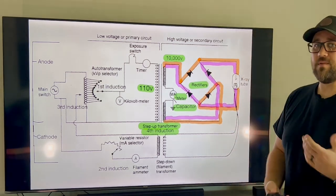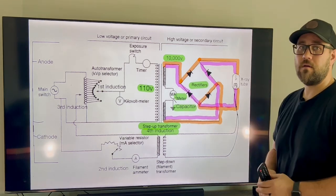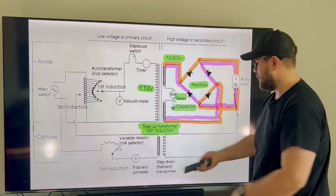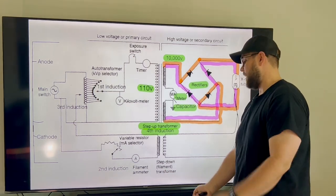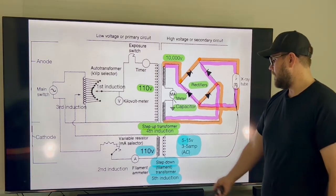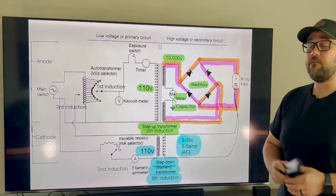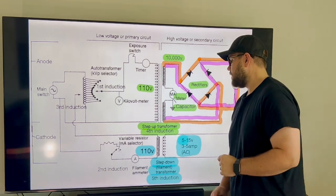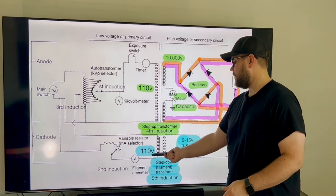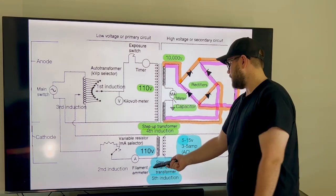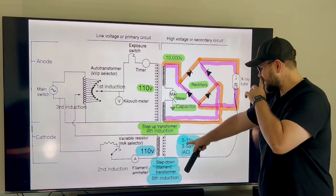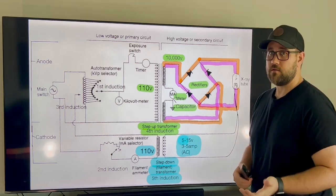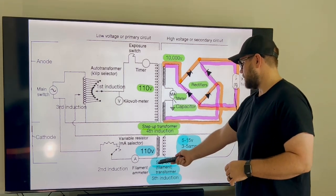Now that our anode side has kind of been talked about, we understand how we went from one side to the other, got our 110 volts to our 10,000 pulsating DC. Let's go back to our last induction that I want to talk about on this page, and that's going to be our step-down, the filament transformer, which will be our fifth induction and our last one talked about on this page. So it's going to take our 110 volts alternating current, and it's going to step it down, so more coils to less. It's going to step it down to 5 to 15 volts. It'll also have 3 to 5 amps, but this also will be alternating current. And again, this is our step-down.